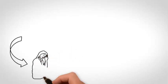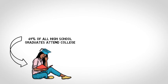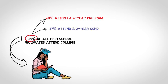Let's fast forward 18 years, when the average child will graduate from high school. We know that around 69% of all high school graduates attend college, and of those graduates, approximately 63% attend a four-year program, and 37% attend a two-year school.